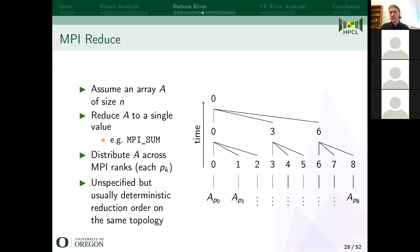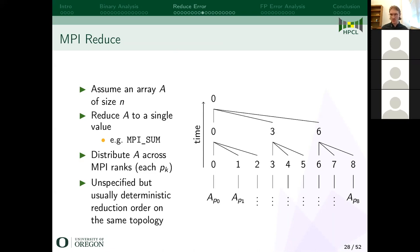We're going to focus on reduction algorithms — taking an array of values and reducing it to a single value, for example adding up numbers in a list via MPI_SUM. You work up through the processes, communicate between them, add the numbers up, and end with a single value. There is an unspecified but usually deterministic reduction order — meaning if you have the same topology and same input running on the same computer, you will get the same answer. This is not automatic; it's due to a lot of hard work of MPI developers, and is recommended but not part of the MPI standard.